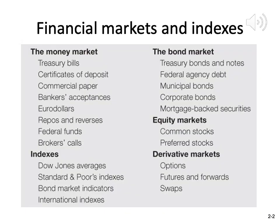Broadly speaking, we can divide financial markets into two markets. The first one is money market. In money markets, all the assets have maturity of less than one year. The second market is capital market. In capital markets, all the assets have maturity longer than one year.